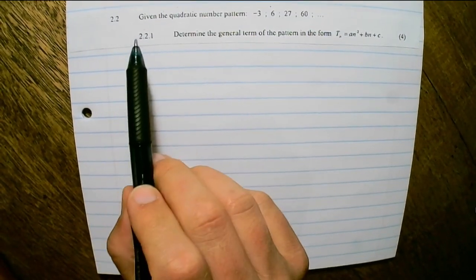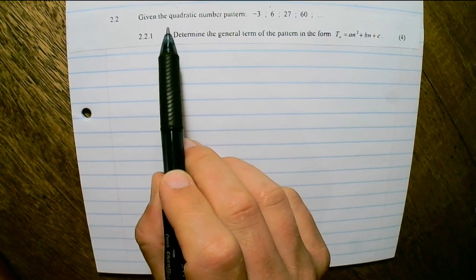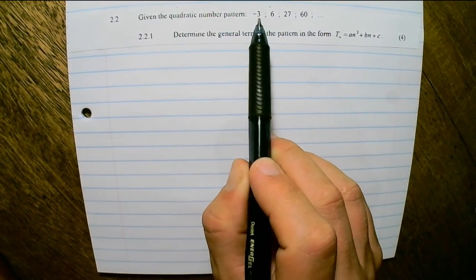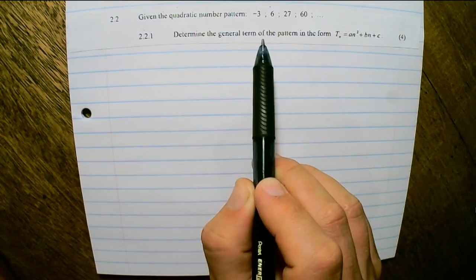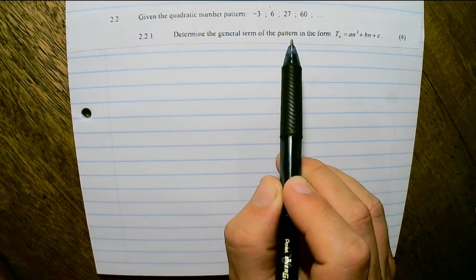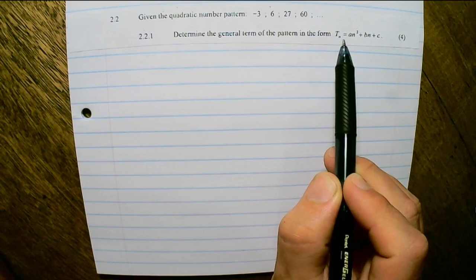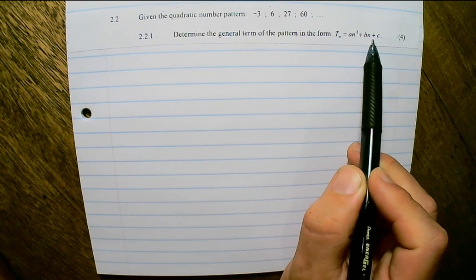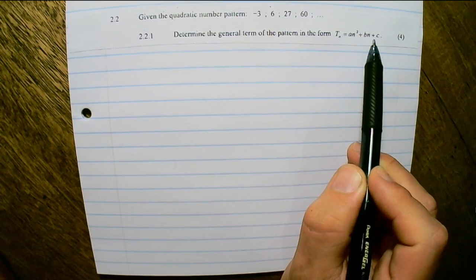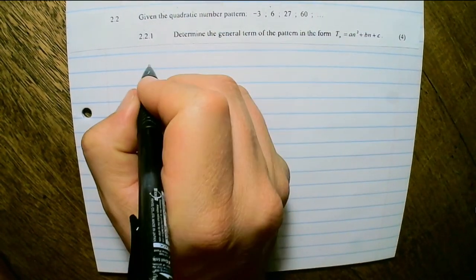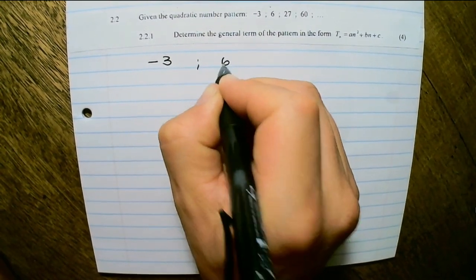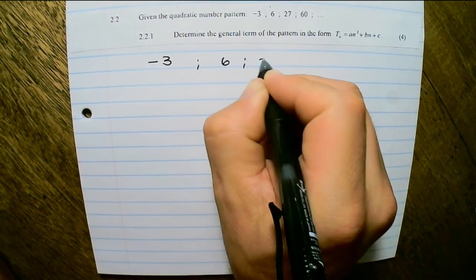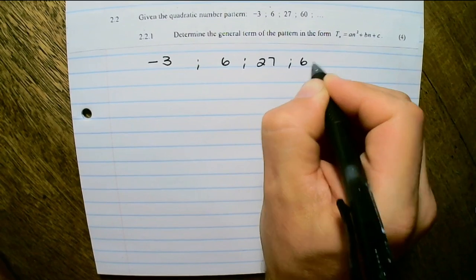The next question says: given the quadratic number pattern negative 3, 6, 27 and 60, determine the general term of the pattern in the form tn equals an squared plus bn plus c. So I have negative 3, 6, 27 and 60.